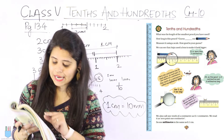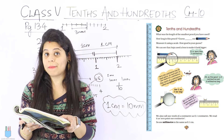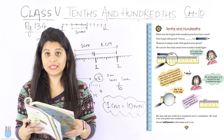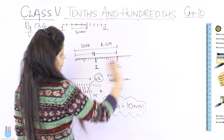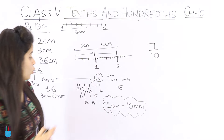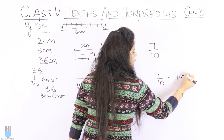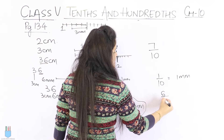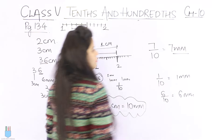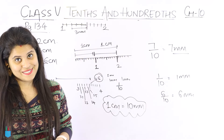Then next is a big ant. It says 'I am longer — 7 tenths of a centimeter or dash millimeters.' Now they say 'I am 7 tenths.' What does 7 tenths mean? Simple logic: when we say 1 tenth, 1 tenth was 1 millimeter. So if I say 6 tenths it means 6 millimeters. When I say 7 tenths, it means 7 millimeters. So the big ant is 7 millimeters.